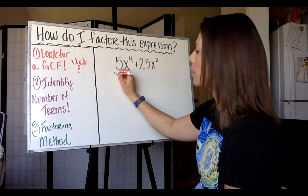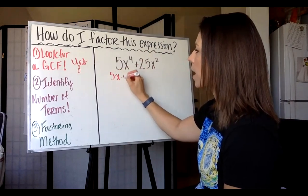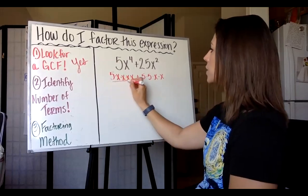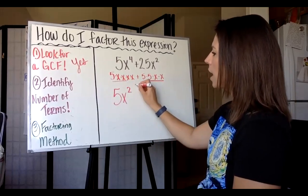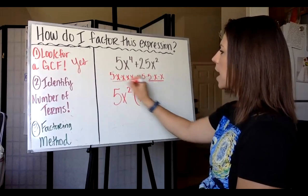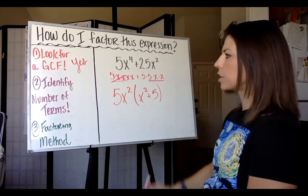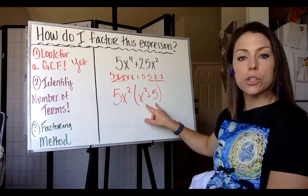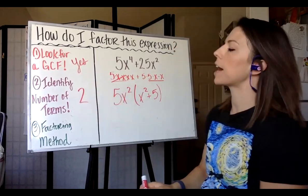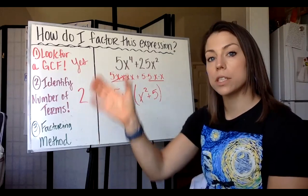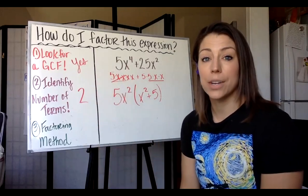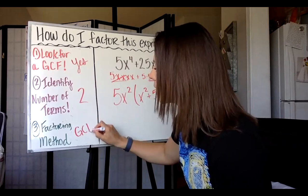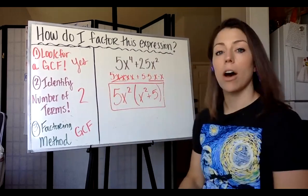Both of these terms have 5x squared in common. Once I factor that out, I'm left with x squared in the first term and five in the second term. Once we've factored out the GCF, we ask: how many terms are left? There are two terms, so we check if it could be a difference of two squares. It's not a difference, and five is not a perfect square, so our factoring method was simply to factor out the GCF, and we are done.